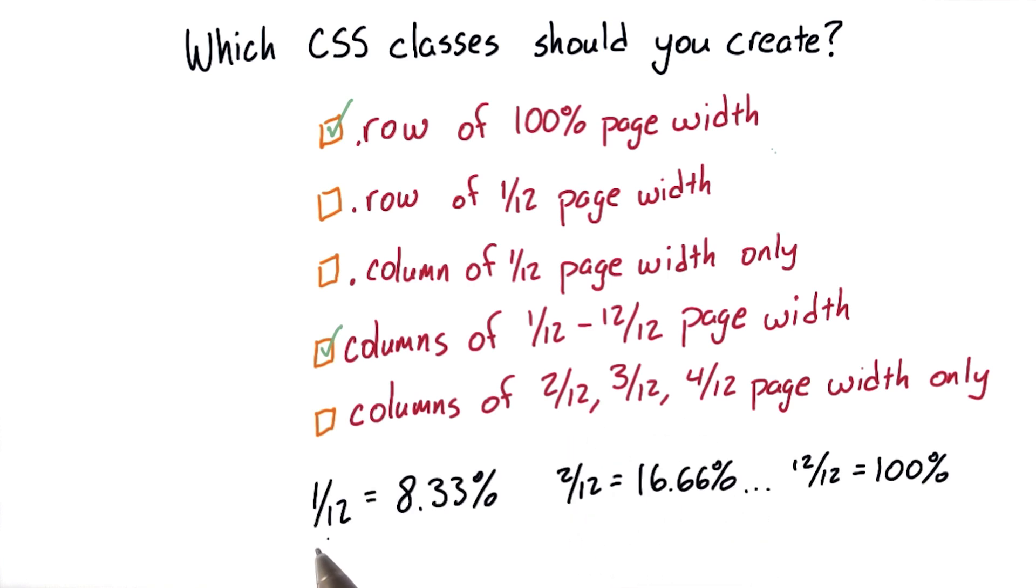It's worth noting that the fraction 1 over 12 is equivalent to 8.33%, 2 over 12 is equal to 16.66%, and so on, all the way up to 12 over 12 being equal to 100%. You'll be using these numbers soon.